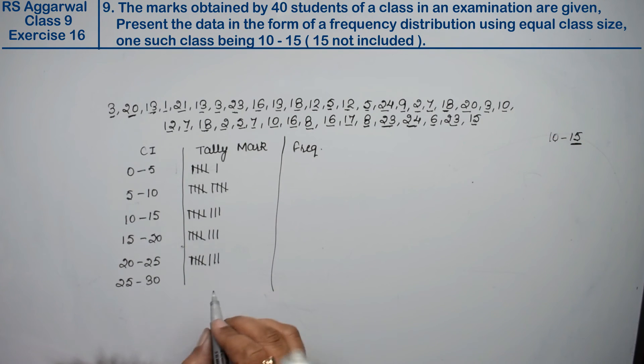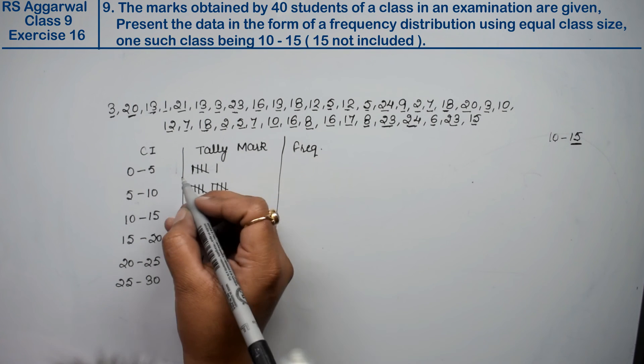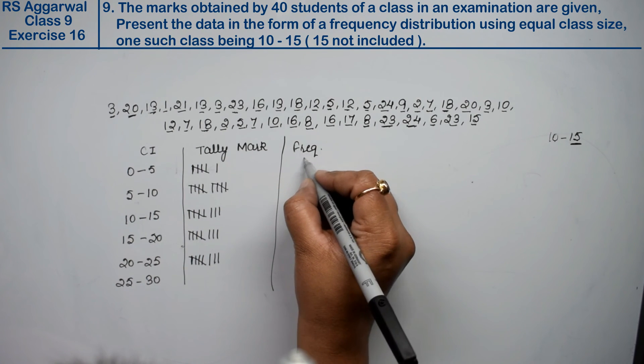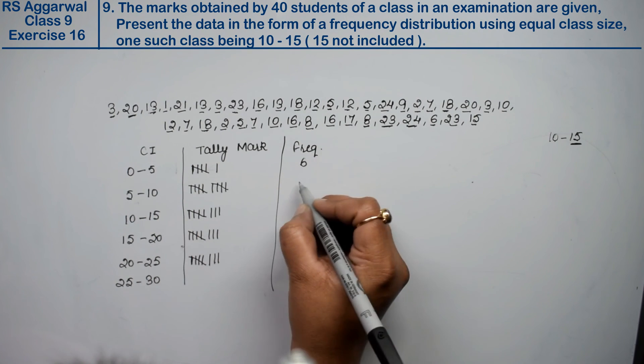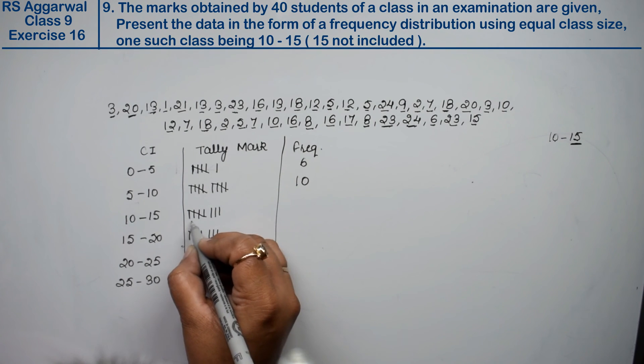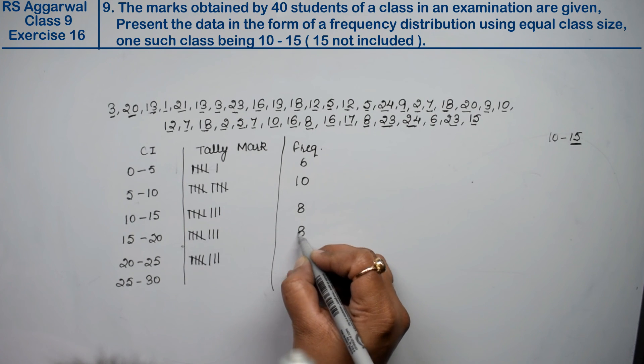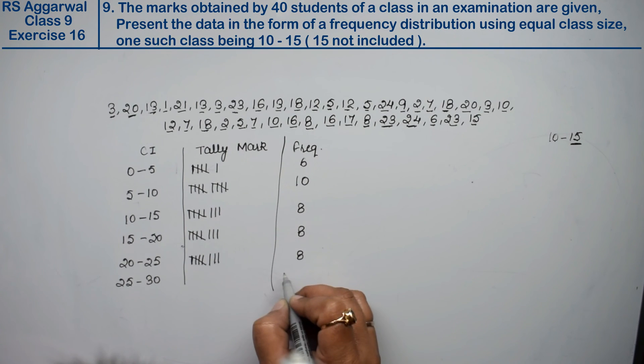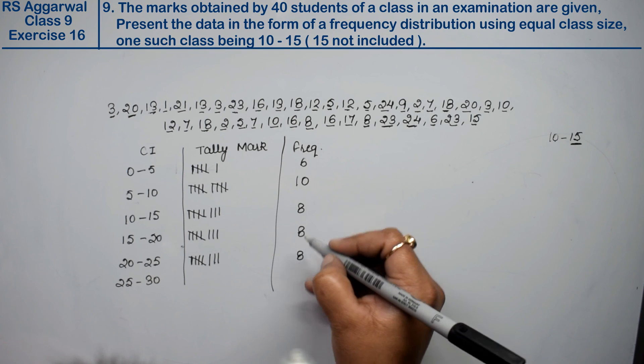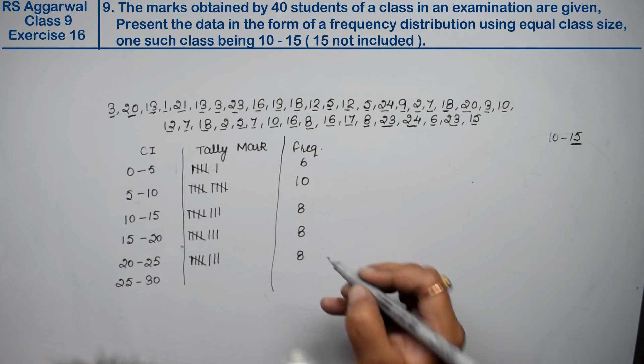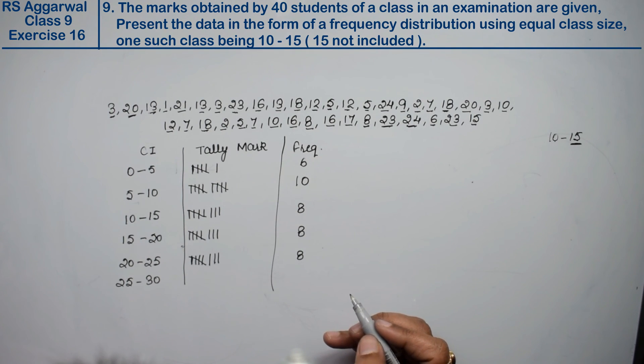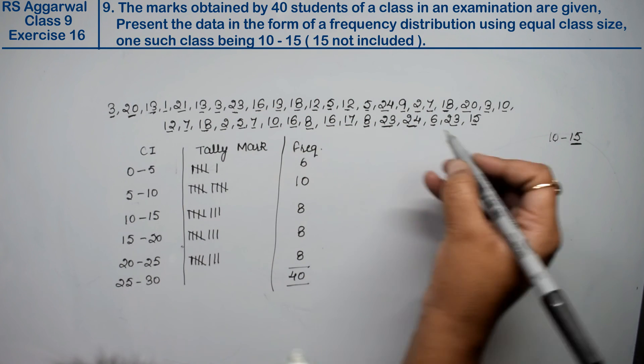This means 25 to 30 has no marks, so we can erase it. Now counting: this means 5 or 6 frequency. This means 10 frequency. This means 5, 6, 7, 8 frequency. This also means 8 frequency. And this also means 8 frequency. If you add them: 20, plus 4 and 6 are 30, and 40. 40 students' marks total to 40, which means the total is correct.